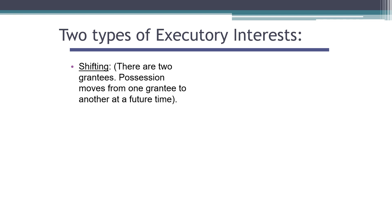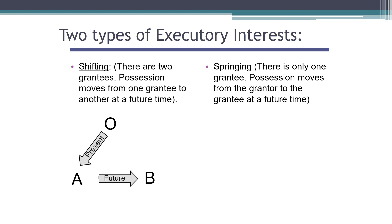Here's a graphic representation of the two kinds of executory interest. For the shifting kind, there are always two grantees — one gets a present interest and the other gets a future interest, and possession goes from the first grantee to the second at a future time. So O gives a present interest to A, and if some condition happens in the future, possession will shift from A to B — that's the shifting executory interest. With a springing executory interest, on the other hand, there's only one grantee, and possession goes directly from the grantor to that grantee at a future time. So O gives a future interest to B, and if some condition happens in the future, then B gets possession of the property.